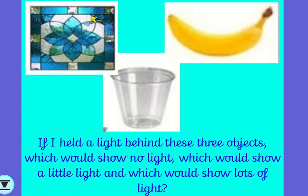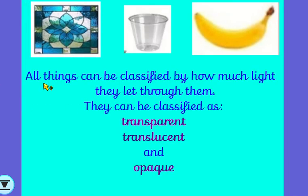So imagine you are holding this glass window here — I know it'd be heavy, but it's your imagination — a plastic glass, and a banana. One of them would show no light through it whatsoever. If I shone a torch the other side, one of them would show a little bit of light and one would show lots of light. You worked it out? Yes, you are right: you can't see anything at all through the banana, you can see a little bit of light through the coloured window, and you'd see all the light through the see-through cup.